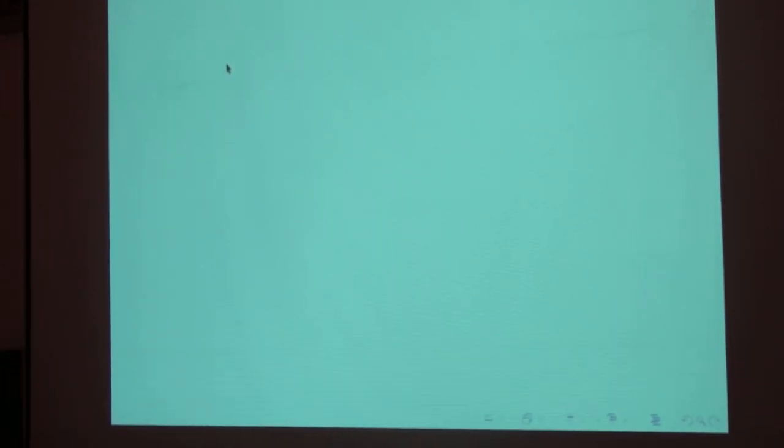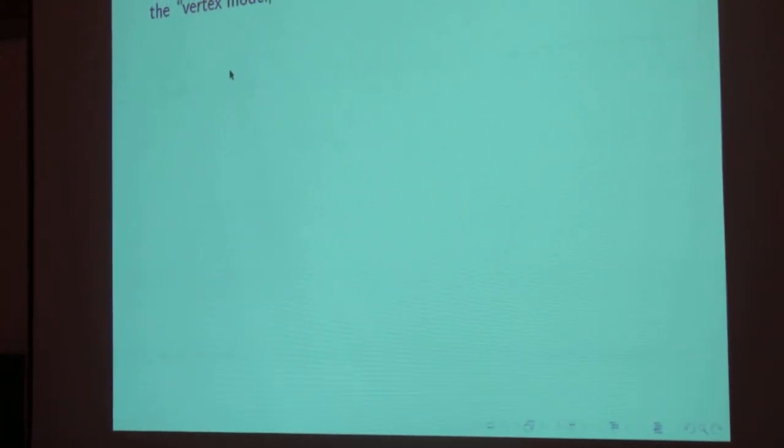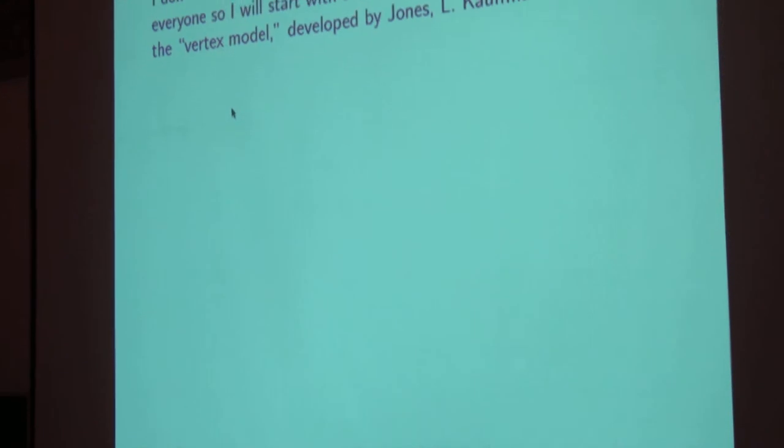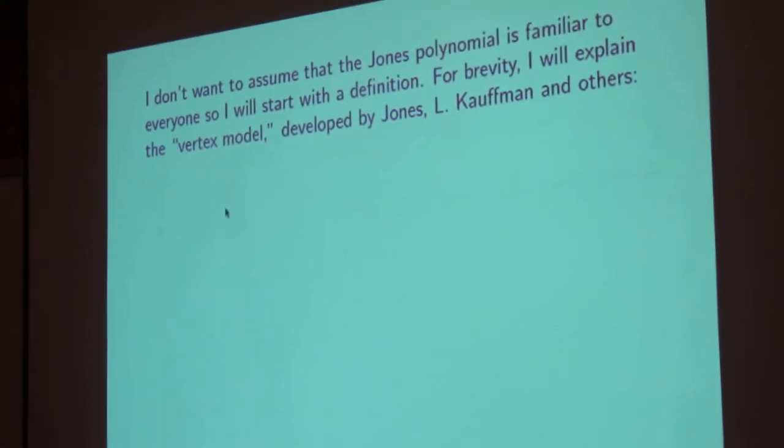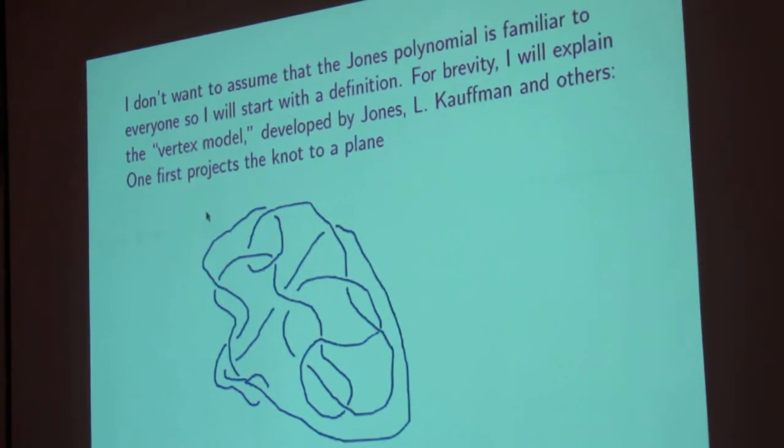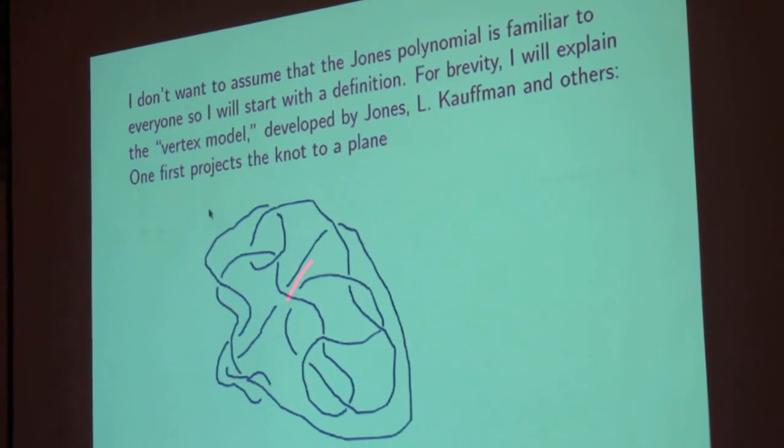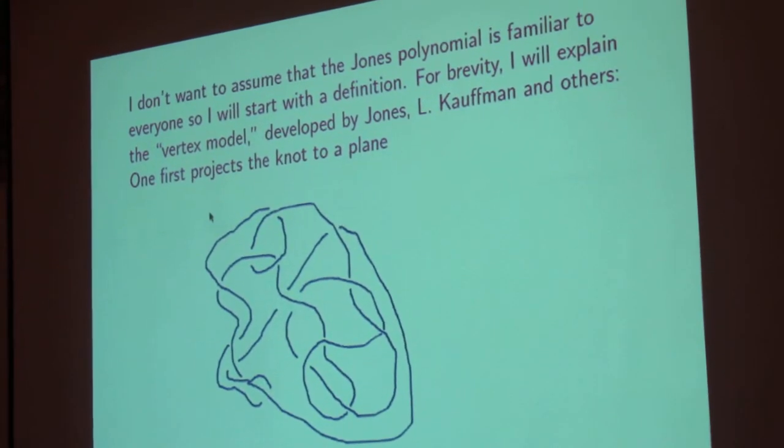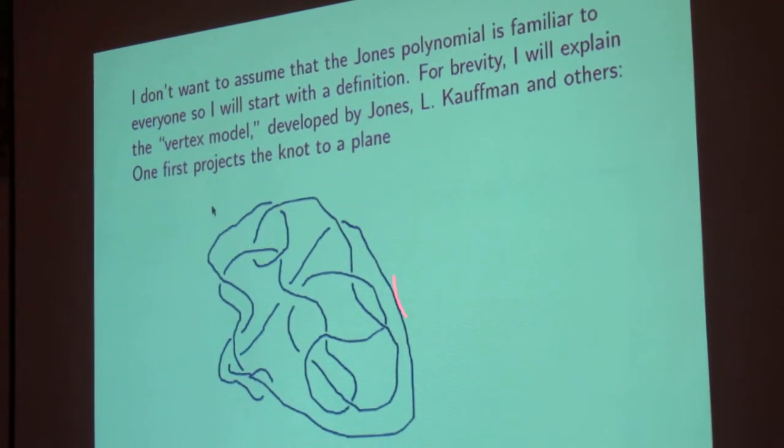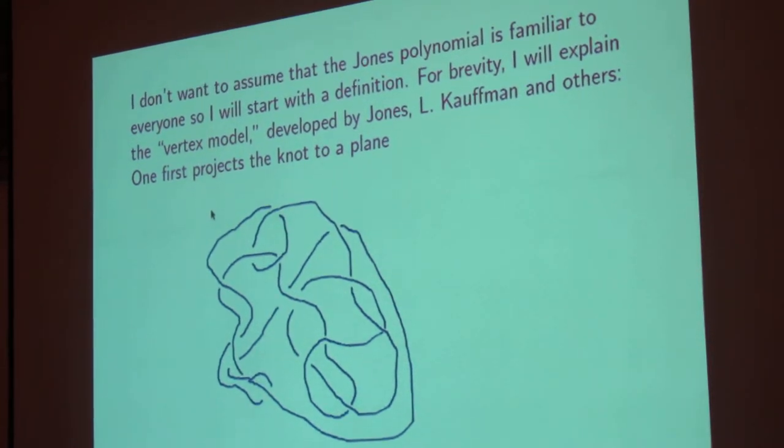So I don't want to assume you all know about the Jones polynomial, so I'll start with the definition. And for brevity, I'll start with something called the vertex model, which as you'll see is related to a discrete version of statistical mechanics. So you start with a knot such as this one in ordinary three-dimensional space, but then you project it onto a plane, for example the plane of the screen.